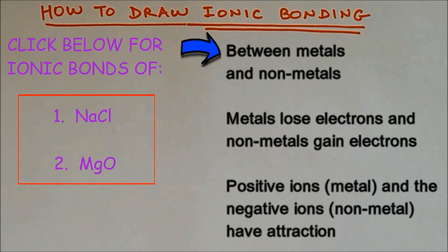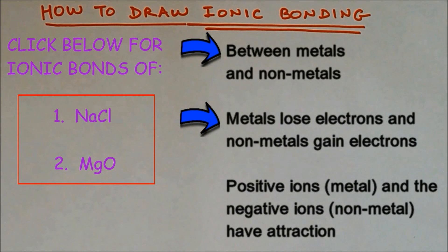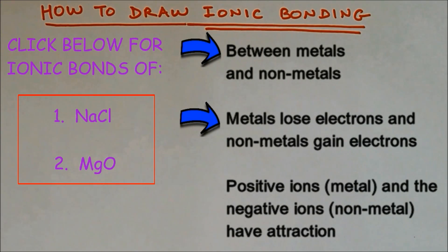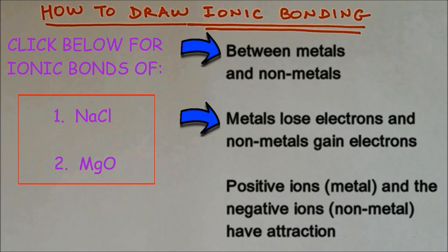Ionic bonding happens between metals and non-metals. The metal will lose electrons and the non-metals will gain electrons, and this is done in order to have a full outer shell of electrons.